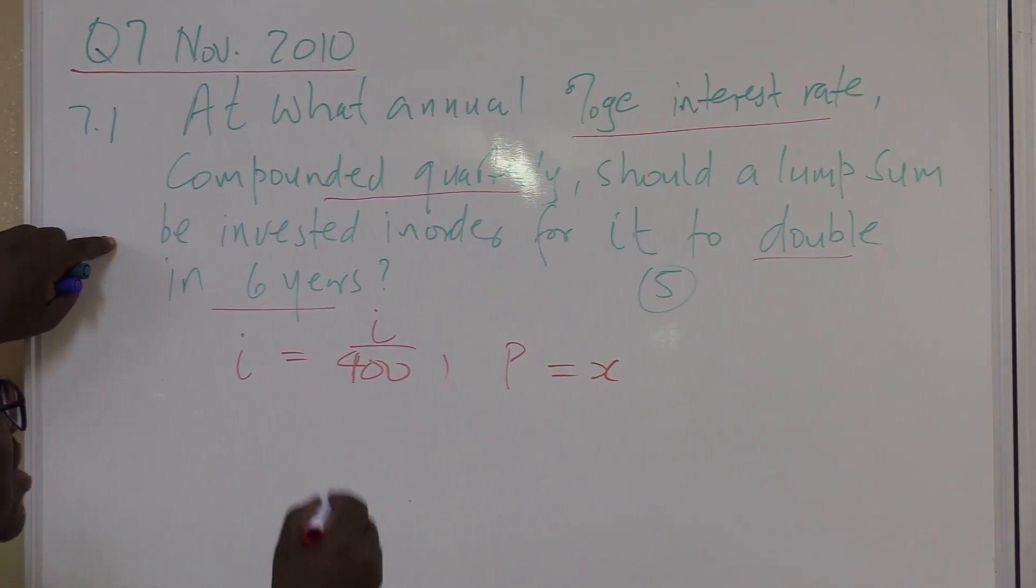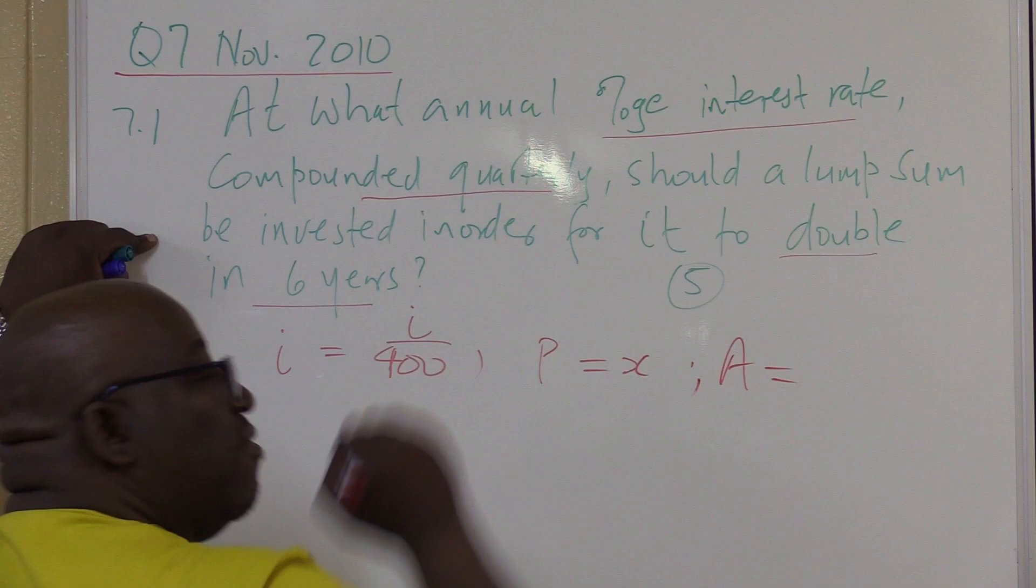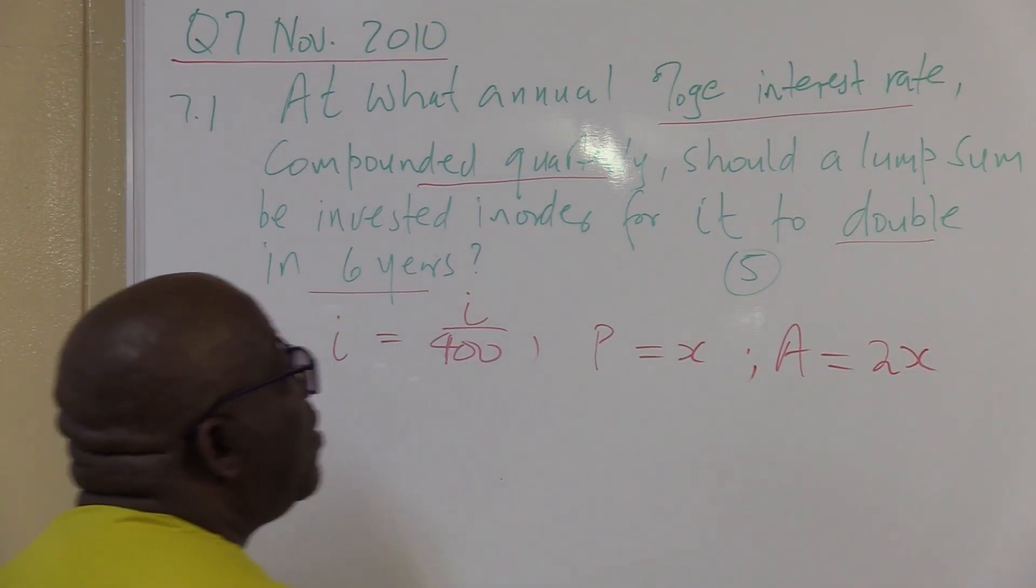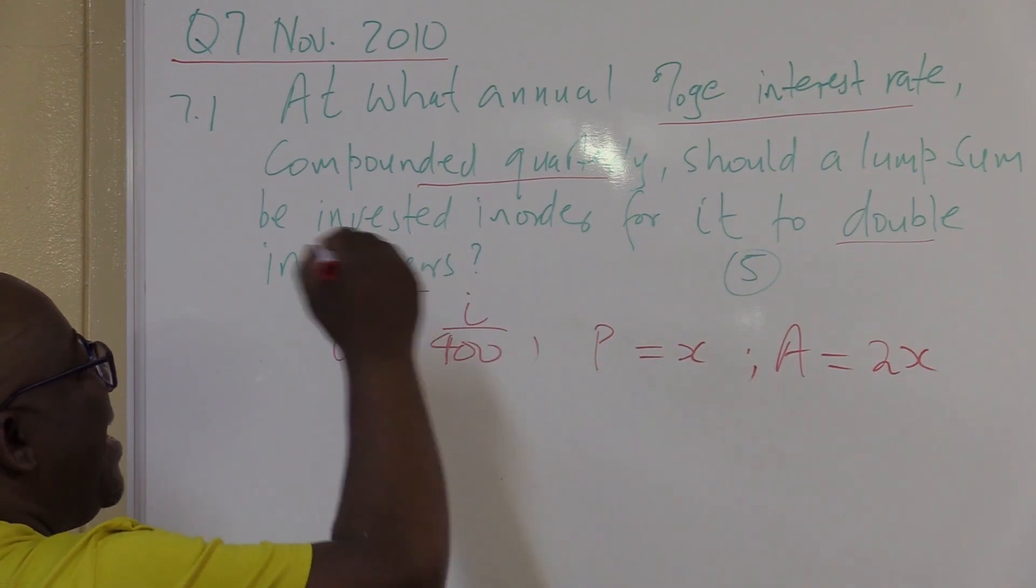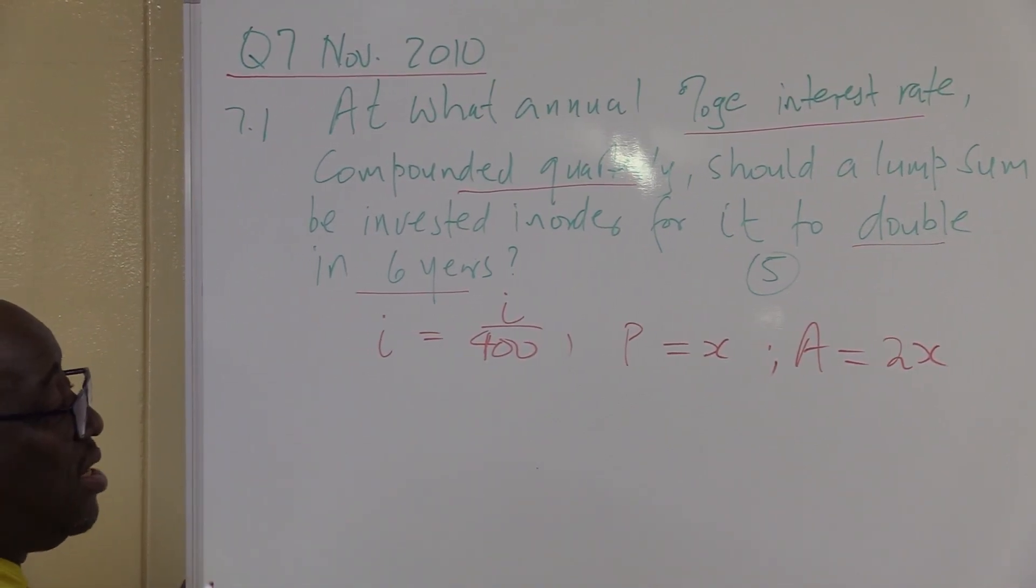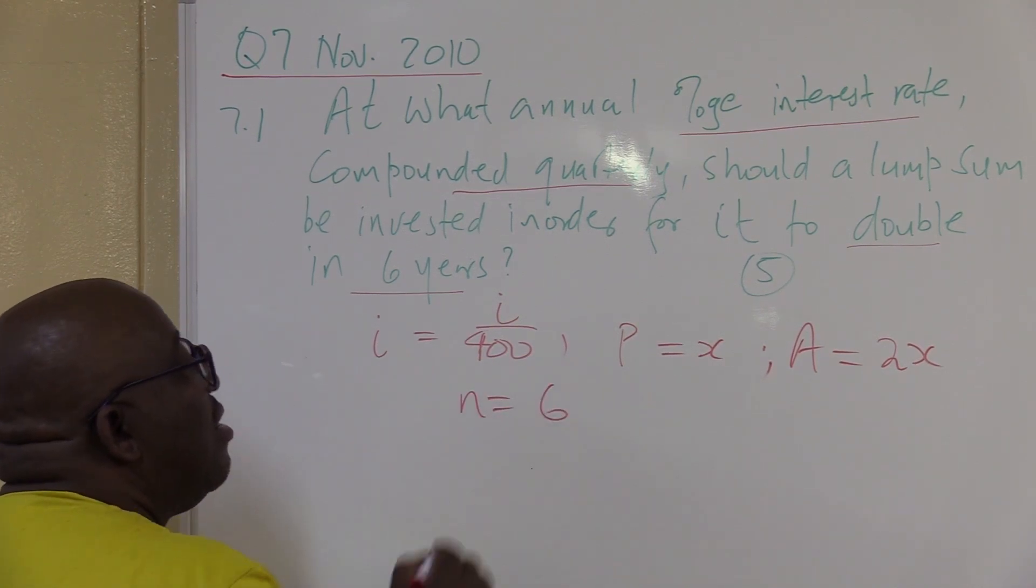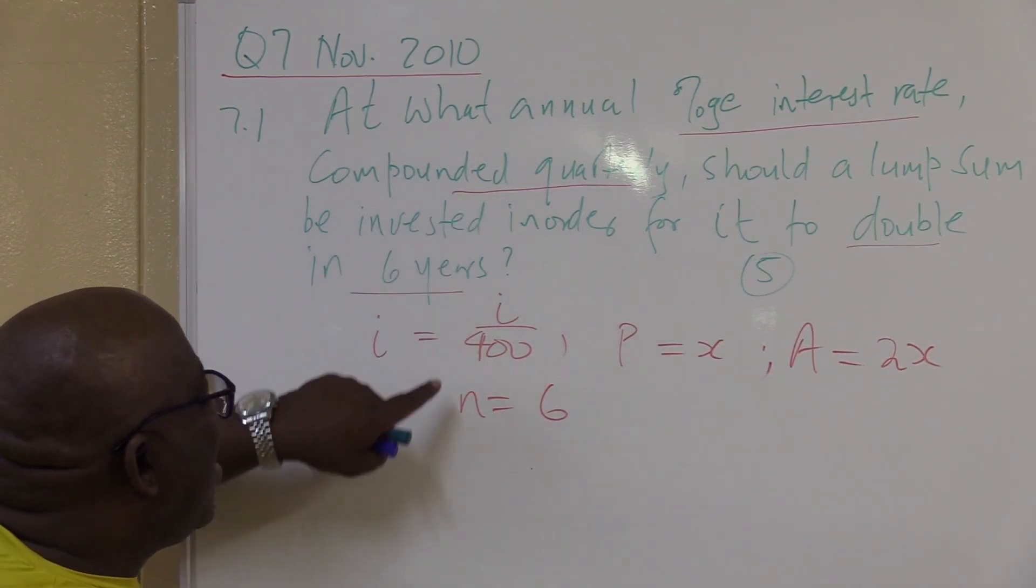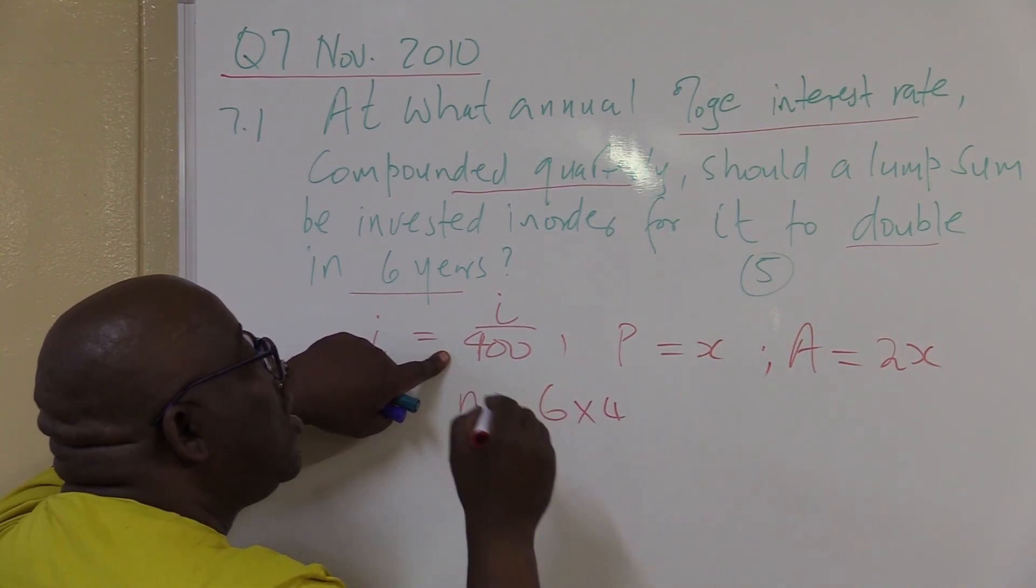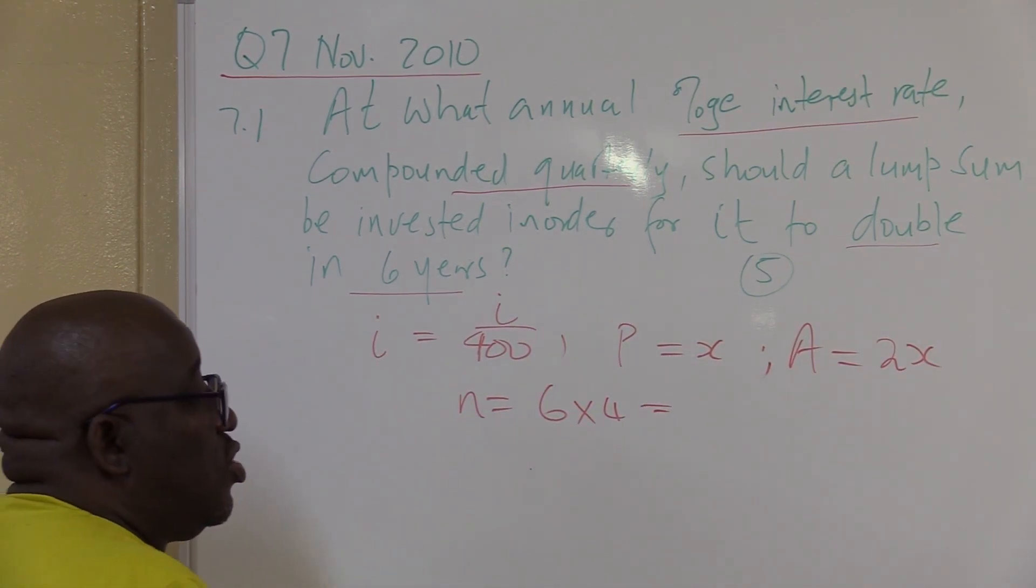We don't know the value of P. In order for it to double after six years, I've got my A to be double the value of P. So if my P is x, what is A? If it is doubling, it will be 2x. Collecting the data is the most crucial step in solving the problems of the maths of finance, so make sure you collect your data correctly. My end is six. Remember this was compounded quarterly, so I've got to multiply my n by four. Six times four - six times two is 12, 12 times two is 24.